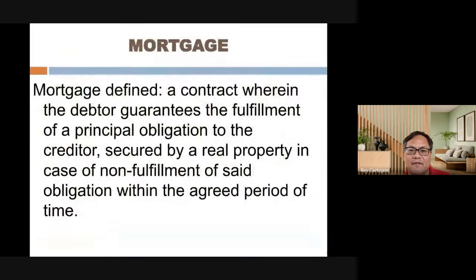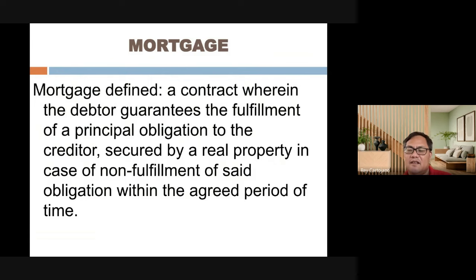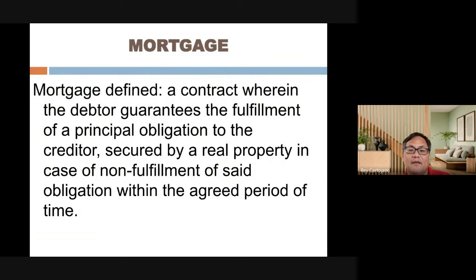In the absence of both registration and possession, the buyer who has the oldest title — the contract of sale with the earliest date — has priority. To recap in case of double sales: R is Registration, P is Possession, O is Oldest title.